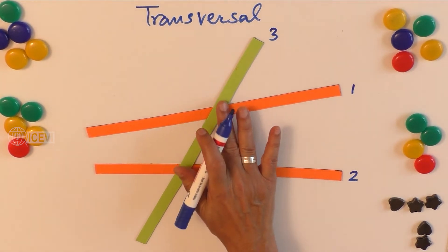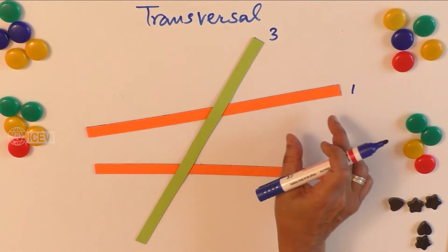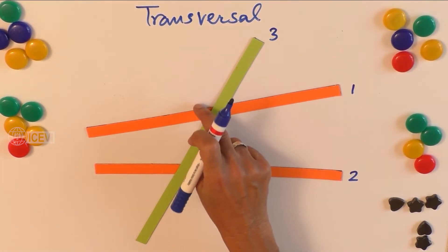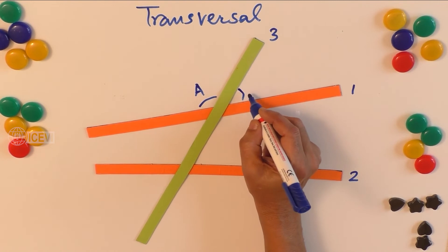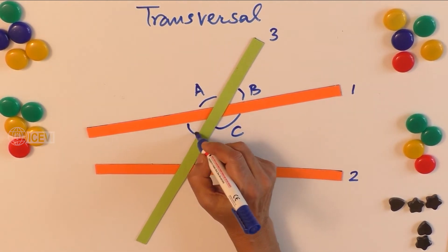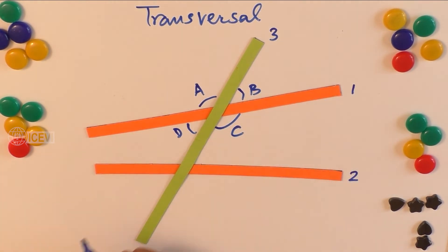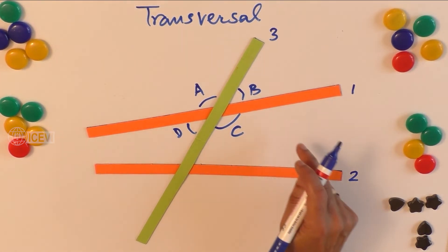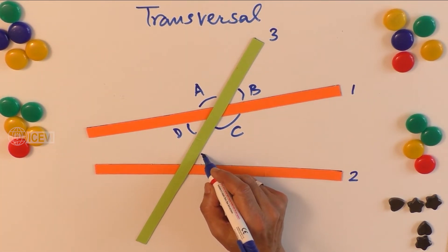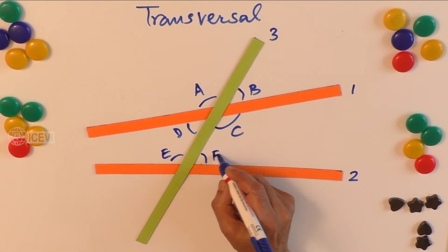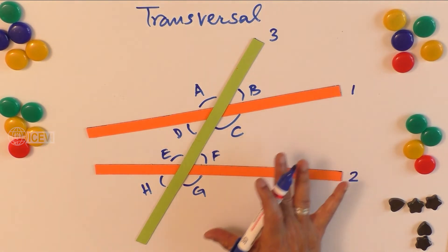Let us call them line one, line two, and line three going through lines one and two on the same plane at two distinct points. When line three intersects line one, four angles are formed. Let us call them angle A, angle B, angle C, and angle D. Similarly, where line three meets line two, we get four more angles: E, F, G, and H.